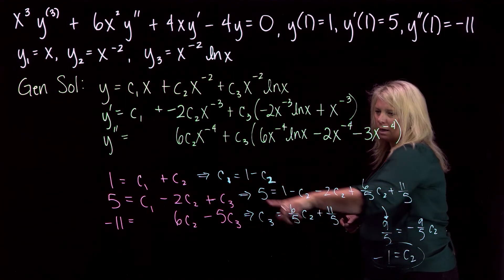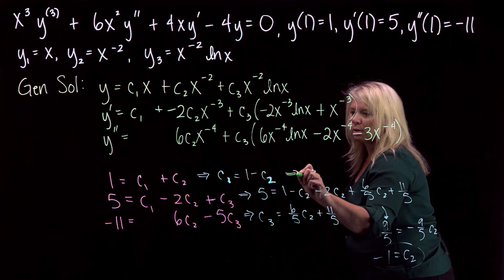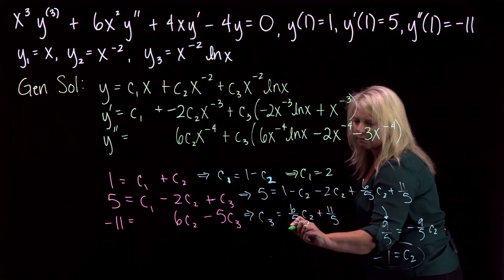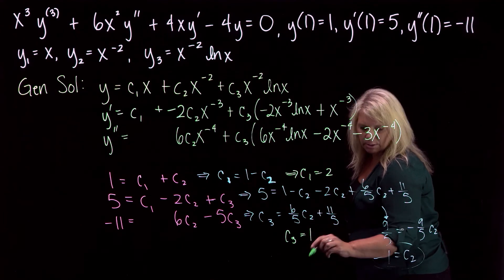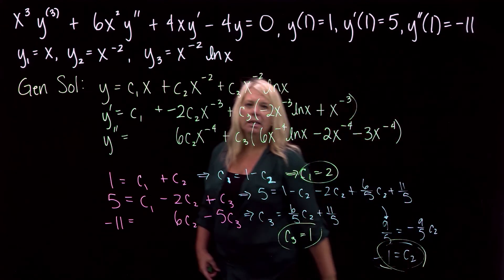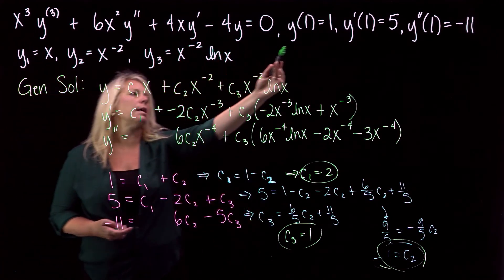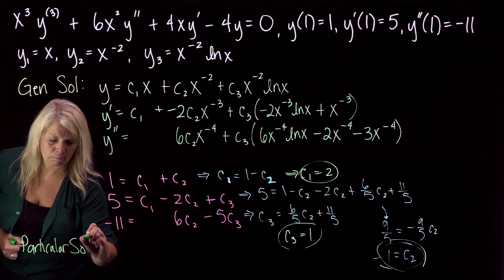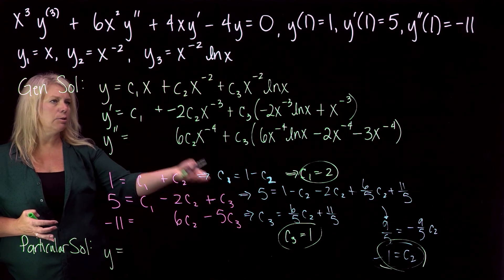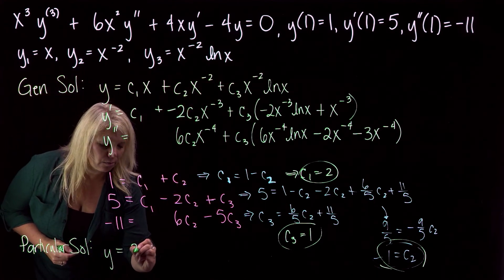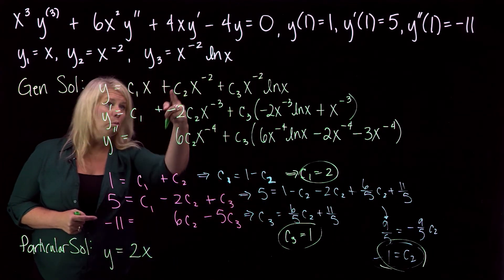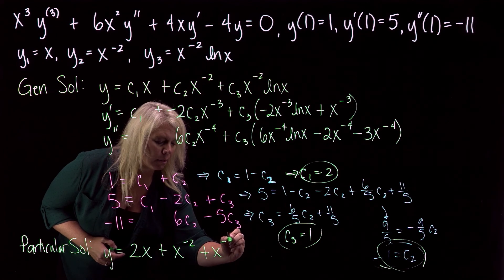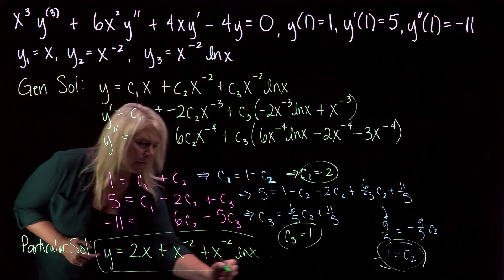With c2 equals negative one: c1 equals 1 minus negative 1 equals 2. And c3 equals negative six-fifths plus five-fifths equals negative one-fifth — wait, that gives c3 equals 1. With all constants found, the particular solution is y equals 2x plus x to the negative 2 plus x to the negative 2 ln of x. That is our particular solution satisfying the initial conditions.